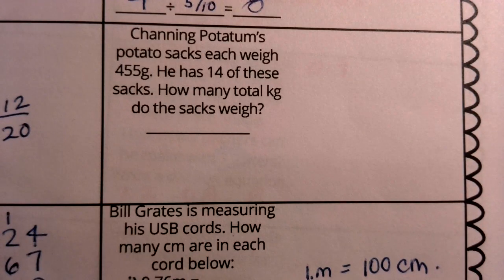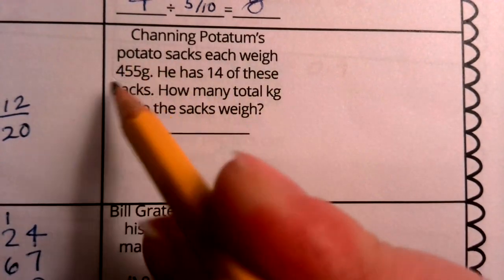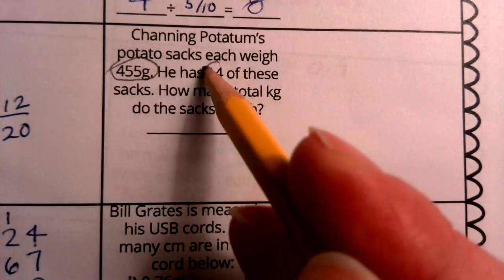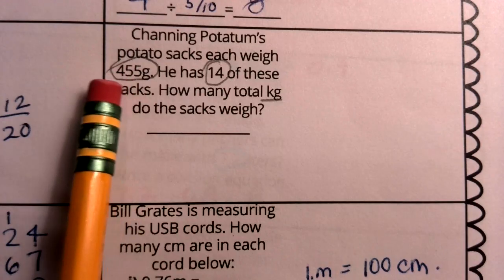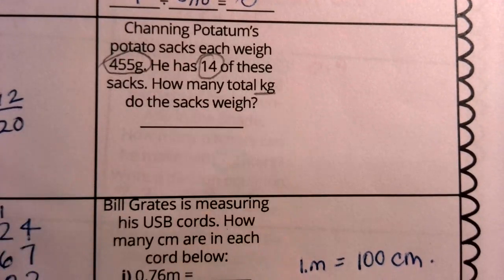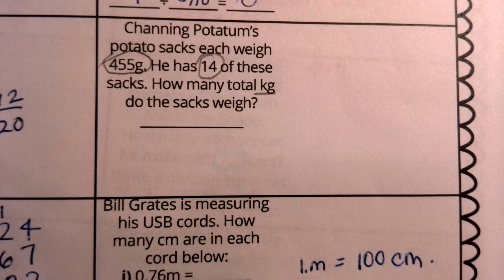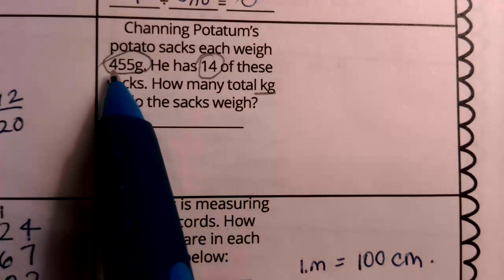Let's go to our next one. Channing Potatum's potato sacks each weigh 455 grams. He has 14. How many kilograms do the sacks weigh? Got a couple different things going on in this problem. You might need to read this one a couple times to make sense of and zero in on those numbers. Also zero in on the form that our answer should take. We're starting with a certain number of grams, and then we're going to take that to a certain number of kilograms.